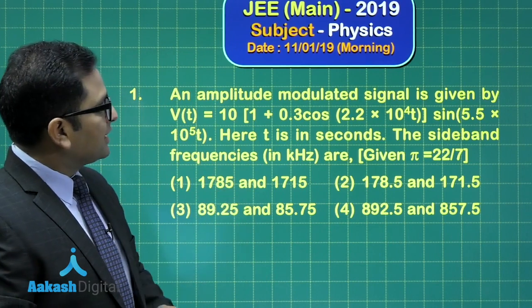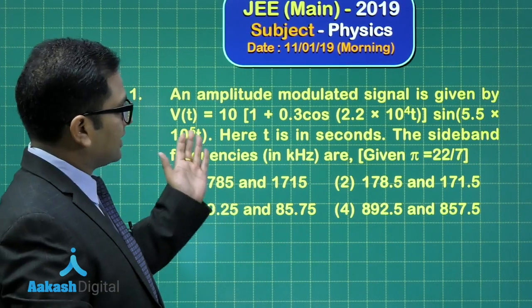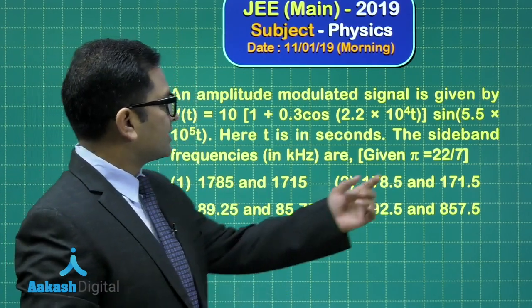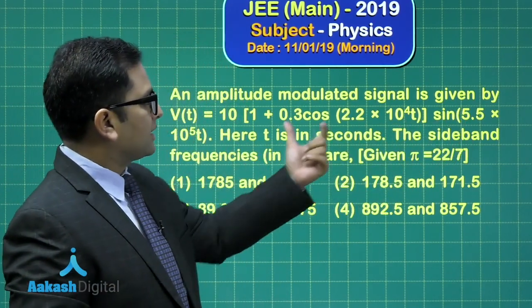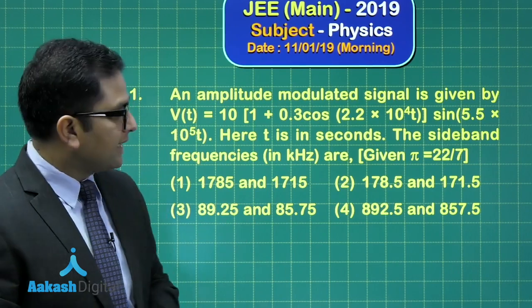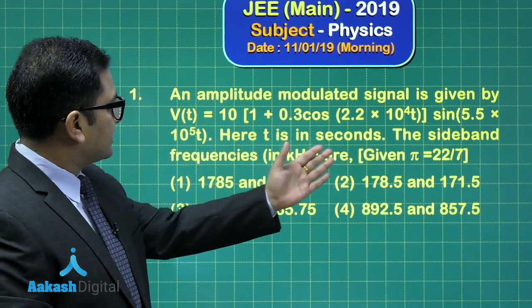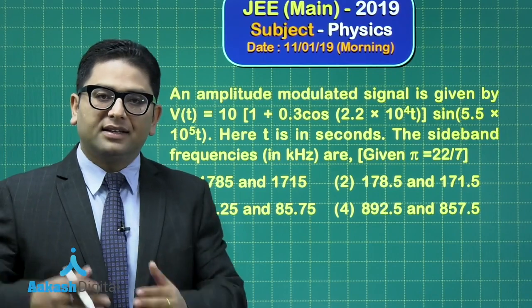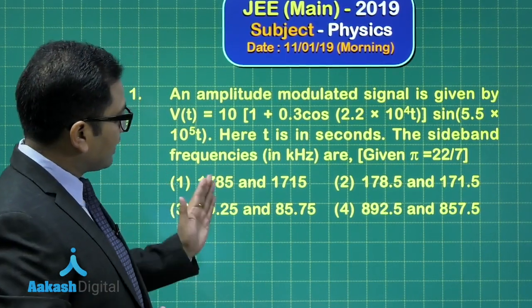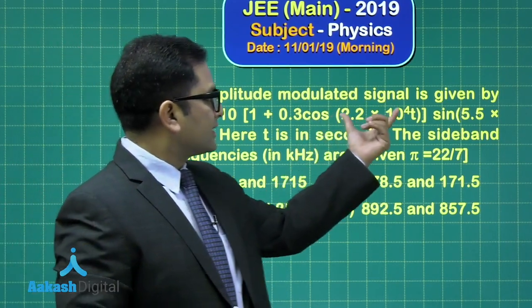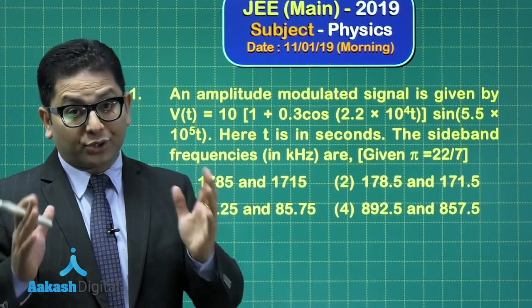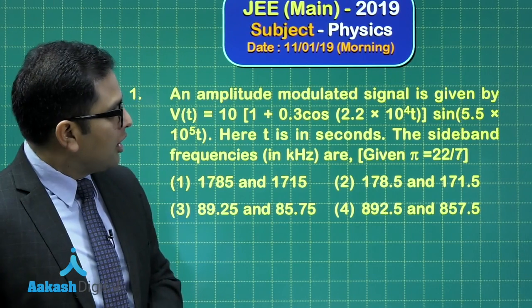So here it says, an amplitude modulated signal (AM) is given by this. Quite obviously from this expression I can easily recognize this is the carrier frequency while this is the modulating frequency. The higher one is the carrier one. That's a nice way to understand. And T is in seconds. The sideband frequency, I require the upper sideband and the lower sideband. That's what is required and we need to calculate this. But remember one thing, this is given in omega while the answer is required in kilohertz. So you've got to be careful in terms of calculation.